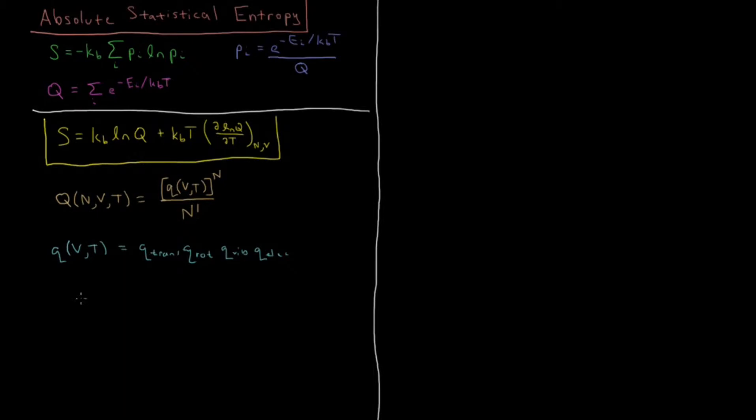So to remind ourselves, let's look at the translational partition function of a single ideal gas particle. And we derived that in a previous video to be 2 pi, mass of the molecule, or whatever compound it is, kBT, Boltzmann constant times temperature, divided by Planck's constant squared, all of that to the 3 halves power, and then times the volume of the system.